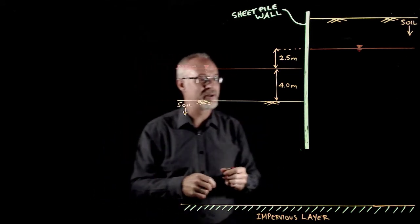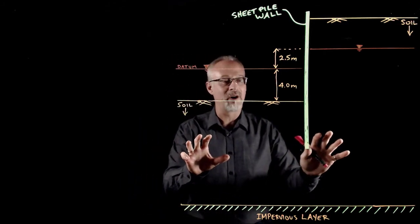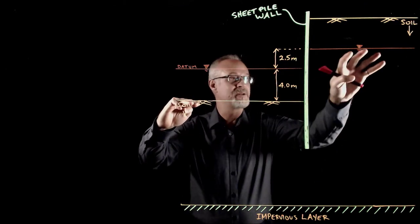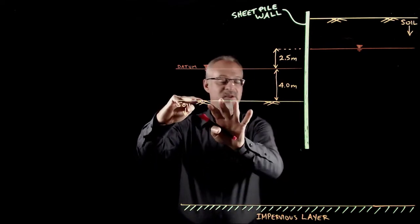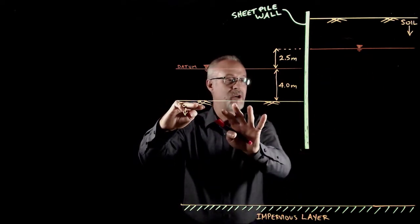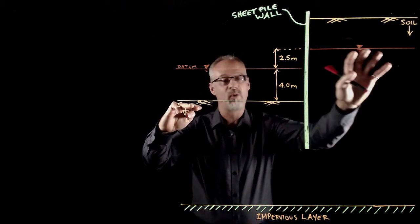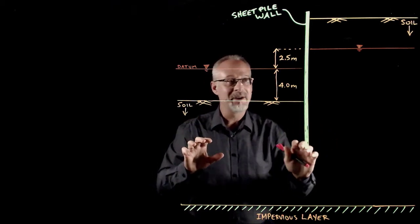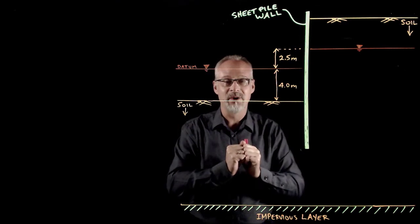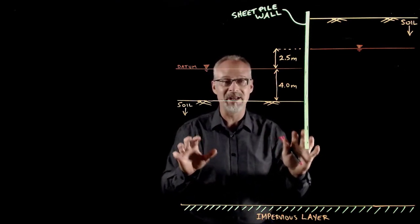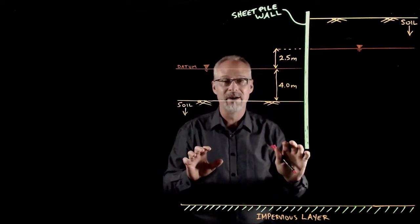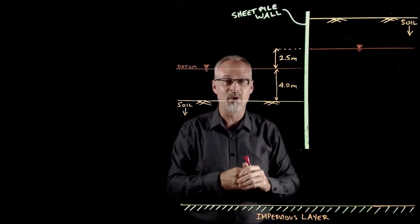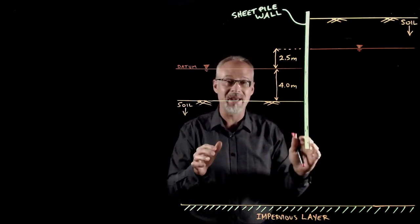Before you draw, notice where the flow net is going to start and stop. For us it goes from the water elevation on the high side down to the soil elevation on the low side, because that's where seepage is occurring. We also assume that the water below the water table in the soil is saturated — a simplifying assumption that's important. The other key assumptions are that the soil is homogeneous and isotropic, meaning the soil is the same everywhere and the hydraulic conductivity is the same in all directions.